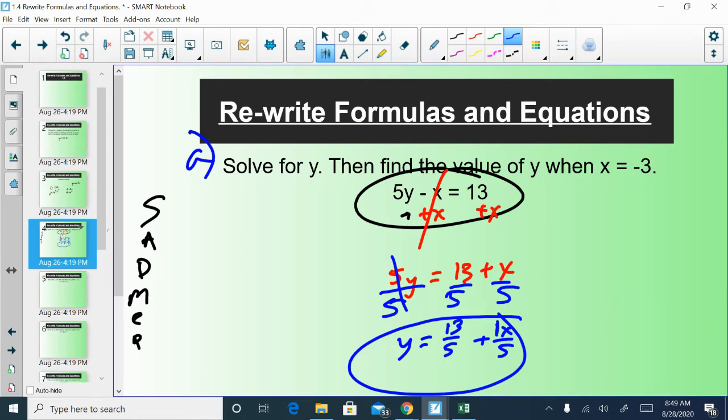Now there is a second part to this question. It says then find the value of y when x is negative 3. So I would have to plug negative 3 in for x. And that would be the second part. Plugging into negative 3, I would have y is equal to 13 over 5 minus 3 over 5. 13 over 5 minus 3 over 5. Well, we can do this pretty easily since we have common denominators. That would just be 10 over 5. 13 minus 3. 10 over 5 is 2. So y would be 2.